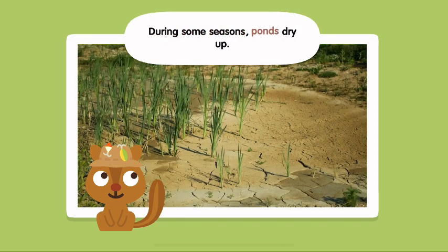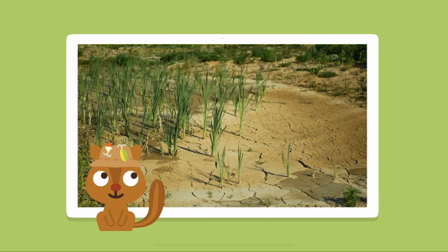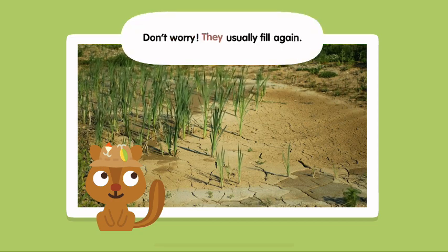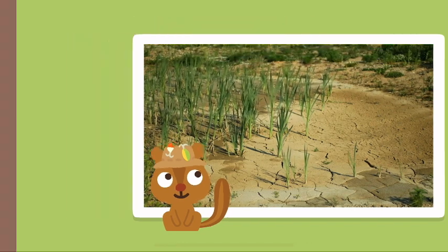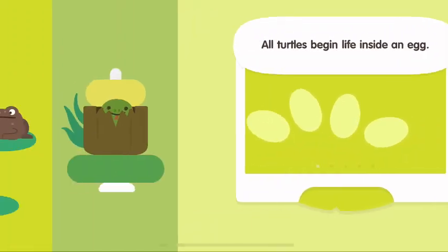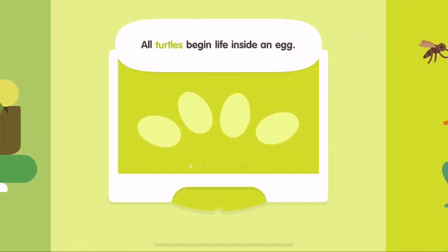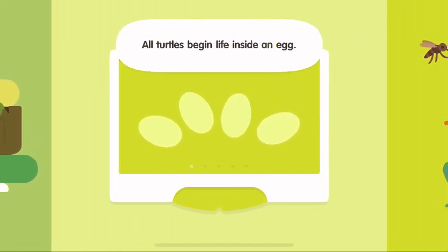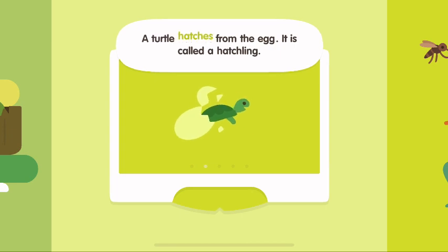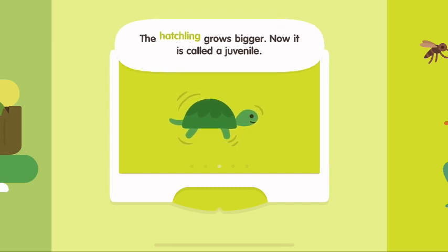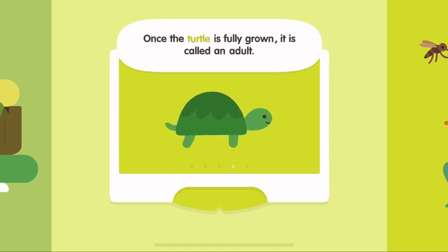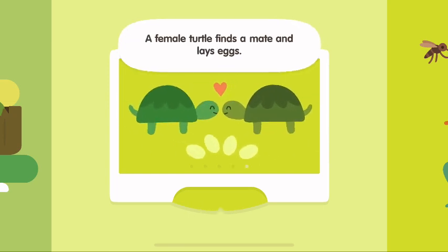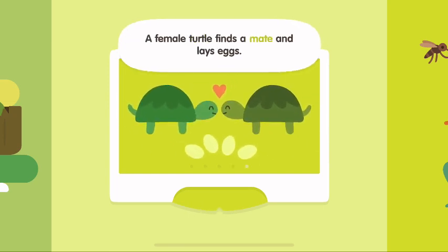During some seasons, ponds dry up. Don't worry, they usually fill again. All turtles begin life inside an egg. A turtle hatches from the egg — it is called a hatchling. The hatchling grows bigger. Now it is called a juvenile. Once the turtle is fully grown, it is called an adult. A female turtle finds a mate and lays eggs.